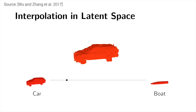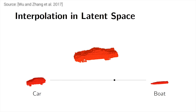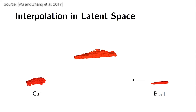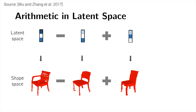Since the technique works on a low-dimensional representation of these shapes, we can also perform crazy algebraic operations between them that follow some sort of intuition. We can add two chairs together, or subtract different kinds of tables from each other.